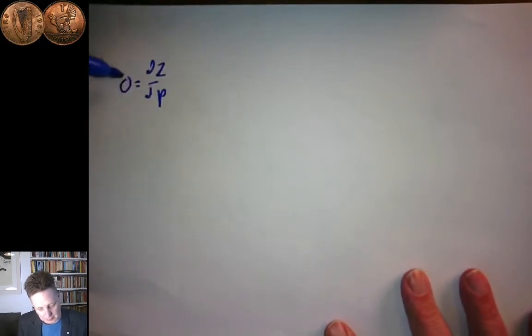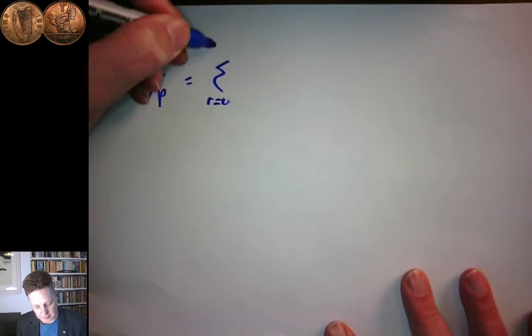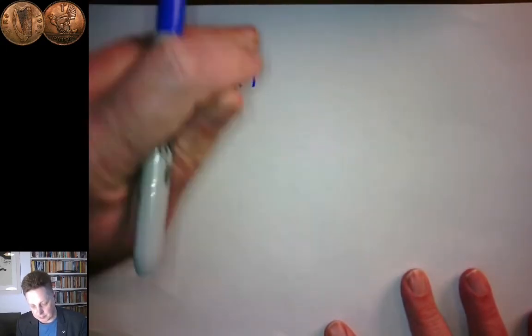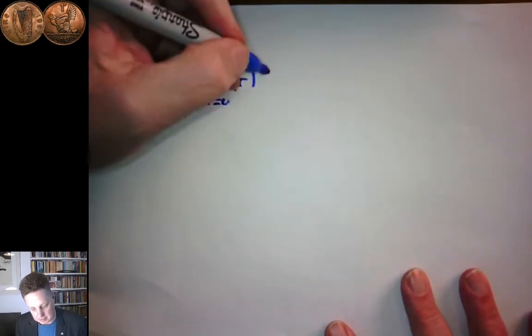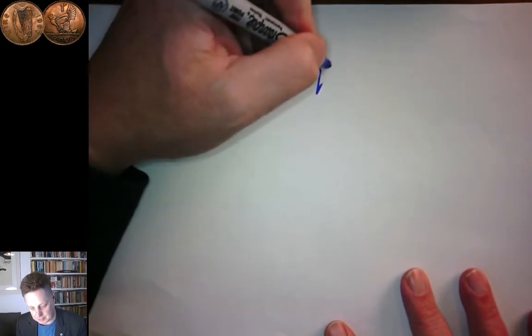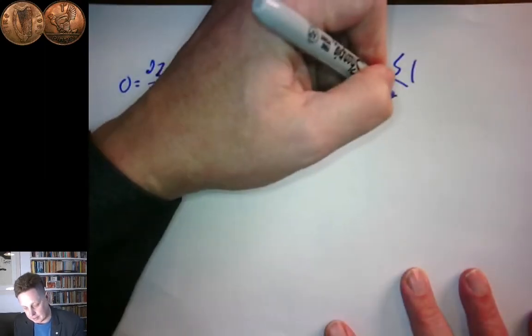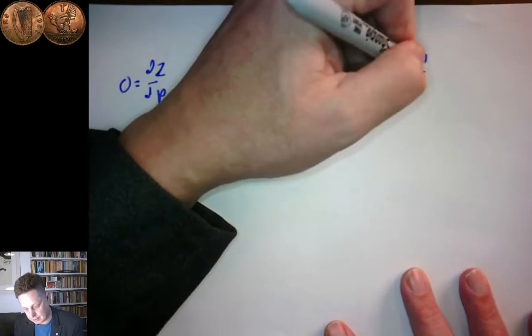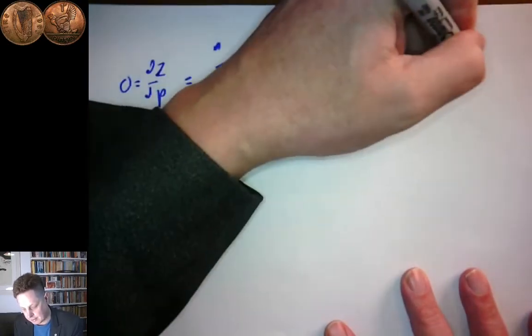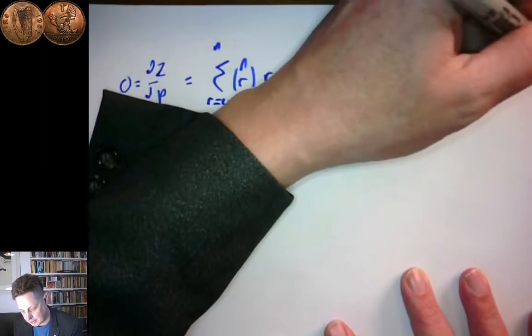Getting back to where we were: dZ/dp equals 0 equals the sum from r equals 0 to n of n choose r, times r times p to the r minus 1, times q to the n minus r. Minus — that minus from the chain rule — the sum from r equals 1 to n of n choose r, times p to the r, times (n minus r) times q to the n minus r minus 1.